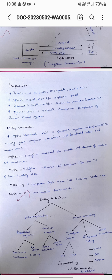MPEG-1 is the original standard for encoding and decoding audio and video files. MPEG-2 is for digital television, compressing files for transmission of high quality video. MPEG-4 compresses high video into smaller scale files. MPEG-21 is a multimedia framework. MPEG standards have coding techniques for entropy encoding and source encoding.